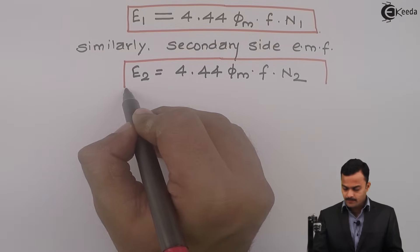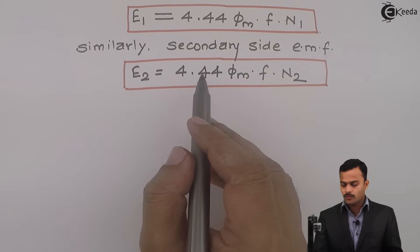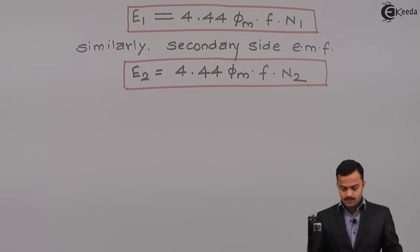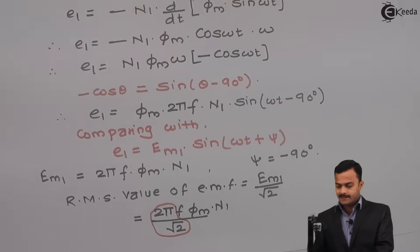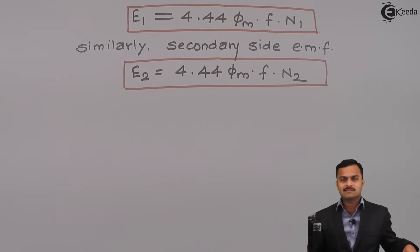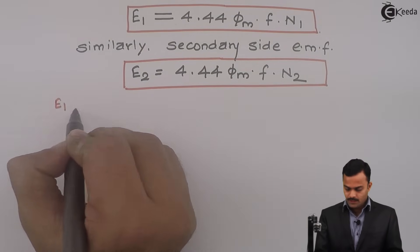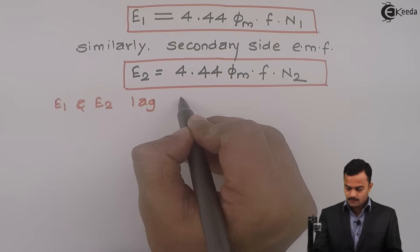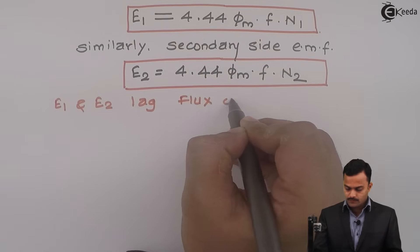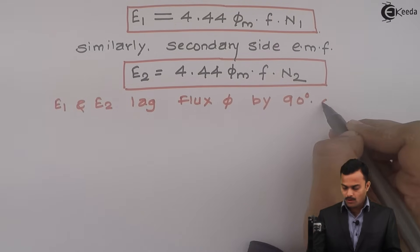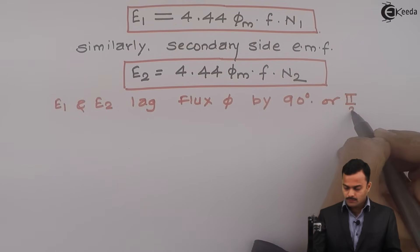Flux phi will be same because EMF induced over here is because of mutual induction. And we got angle minus 90 degree with respect to flux waveform. Minus 90 means it's lagging. So I can write a statement: E1 and E2 lag flux phi by 90 degree or pi by 2 radian.